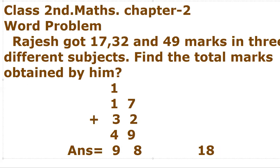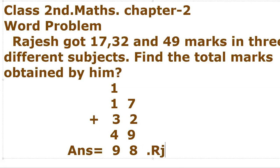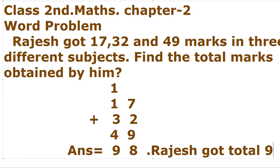Rajesh obtained total marks of 98. Write the answer line: Rajesh got total 98 marks. The second word problem is also completed. You need to read the problem, find what is asked, and do the addition.